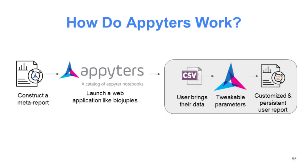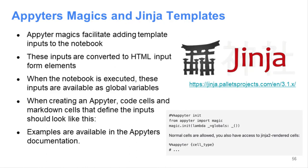You have this report — you build your Jupyter notebook as it is, and then you insert into the notebook those fields. You substitute variables with those fields. Then you launch the Appyter, and once it's ready and launched, you bring in your data and submit it. Using some Python libraries associated with those Jupyter notebooks, the notebook gets filled with your data and gets executed, and then you see the results in the browser.